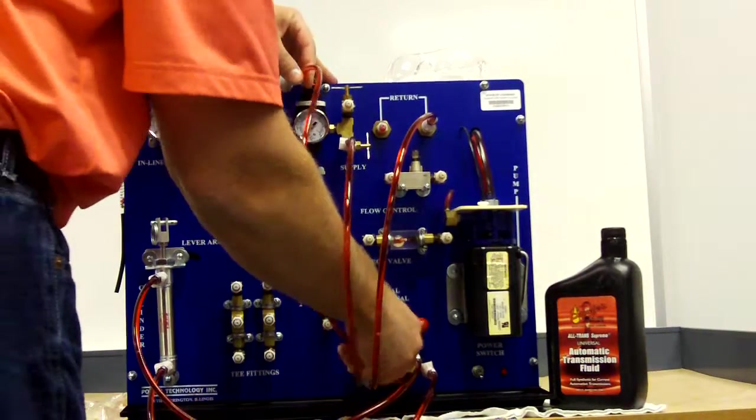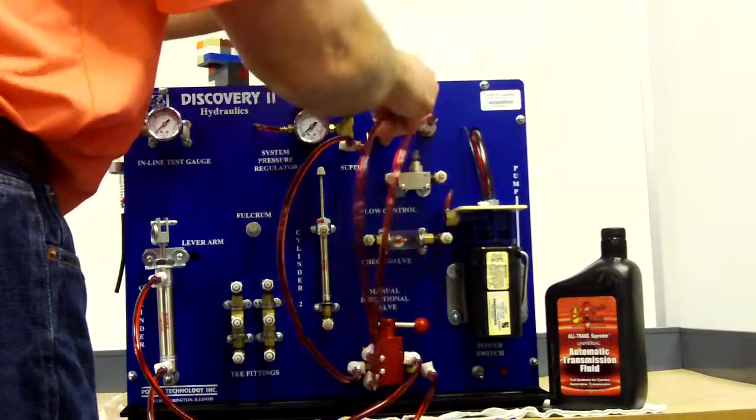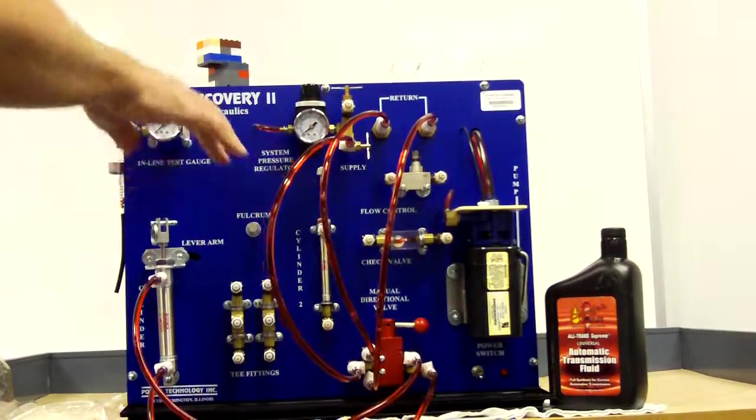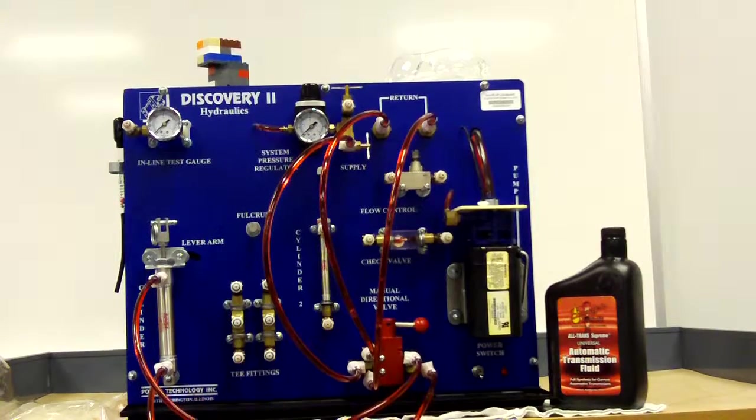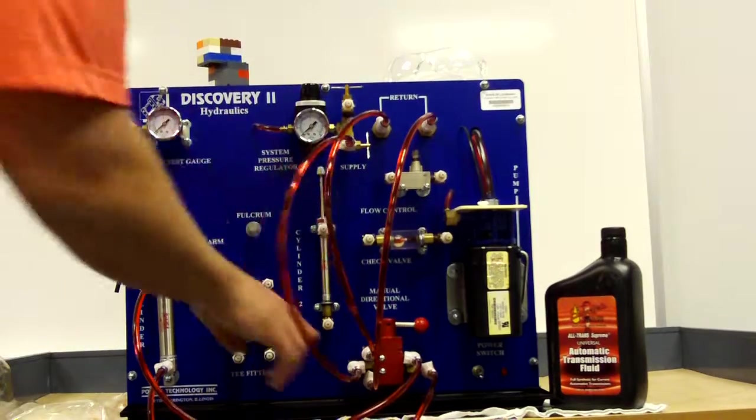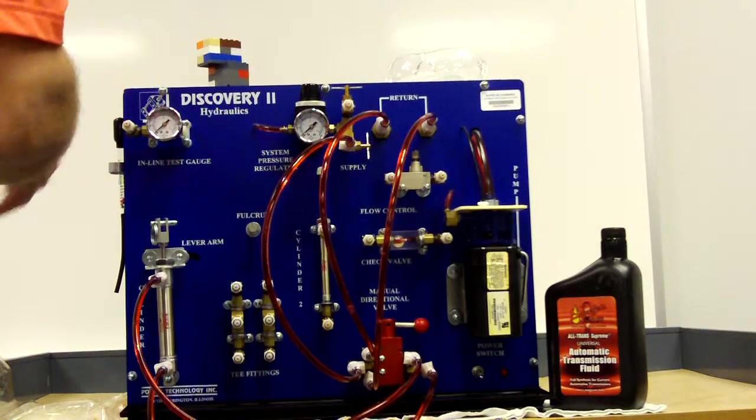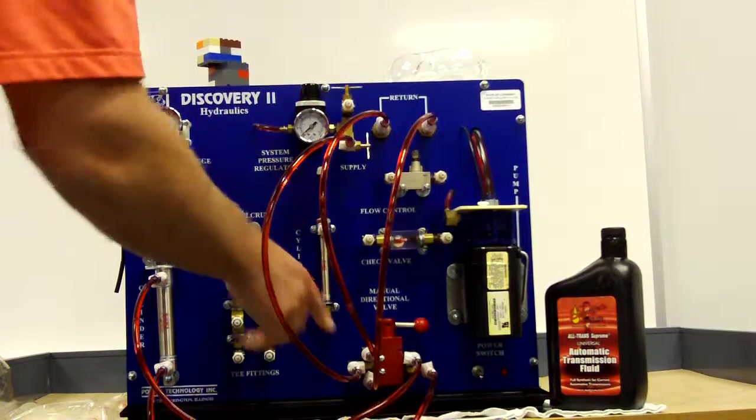So these are the out portions of the directional control valve. Preferably the directional control valve is labeled properly, and then you can actually see where the connections are at. The connections we're making are tubes.